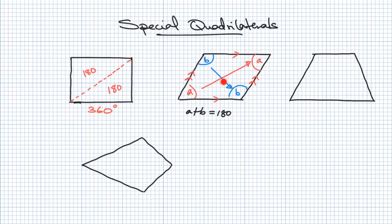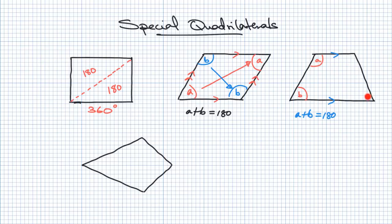The main thing to remember is that the opposite angles along the diagonal are the same size. Now for the trapezium: it's a special quadrilateral with only one pair of parallel sides. Because these two sides are parallel, these two angles are supplementary — a plus b equals 180. The same applies to the other pair of co-interior angles. However, this angle and that angle are not equal, so be very careful about that.